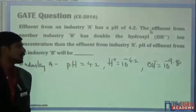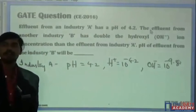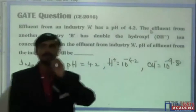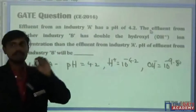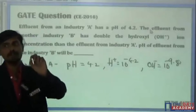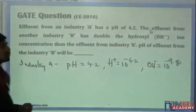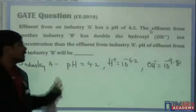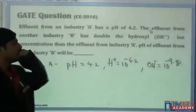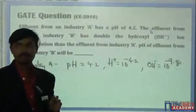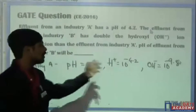So OH⁻ = 10 to the power minus 9.8 moles per liter. The product should equal 10 to the power minus 14 — the product of H⁺ ions into OH⁻ ions equals 10 to the power minus 14. All the data related to Industry A has been written and converted.